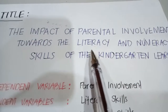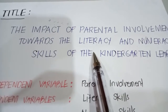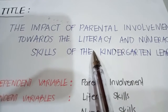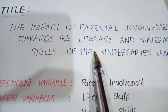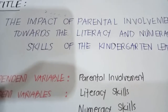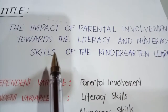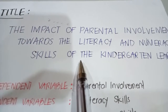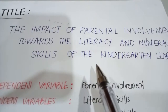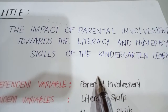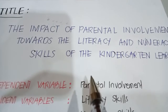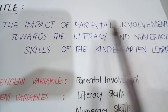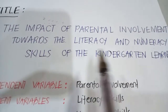Finally, the last key area is an example of a theoretical framework. We will now create a theoretical framework by applying the three steps. Before creating it, recall that last time we discussed the statement of the problem — and if you haven't watched that discussion, the link is included in the description box below. Our title was: The Impact of Parental Involvement Towards the Literacy and Numeracy Skills of the Kindergarten Learners.